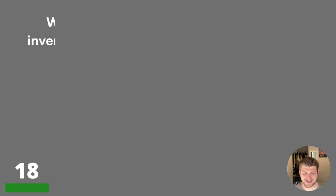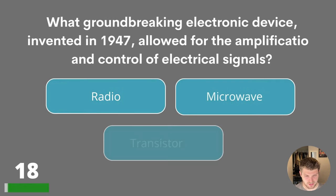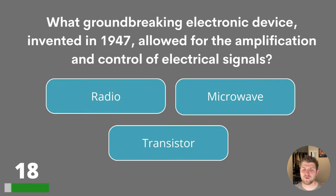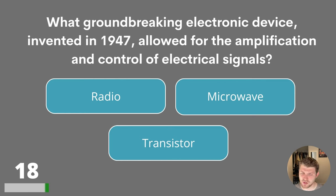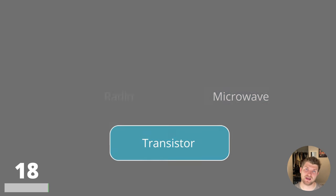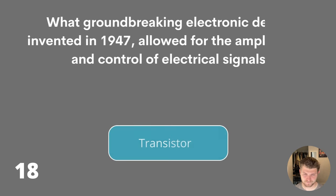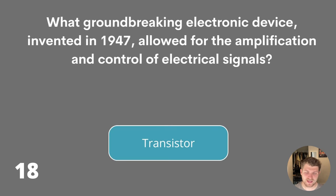Question eighteen. What groundbreaking electronic device invented in 1947 allowed for the amplification and control of electrical signals? Was it radio, microwave or transistor? The answer is transistor.